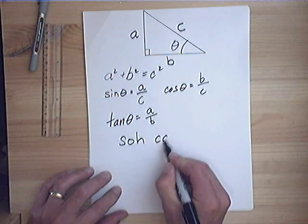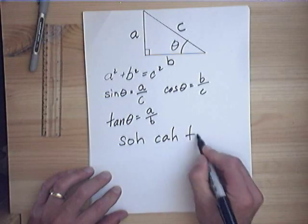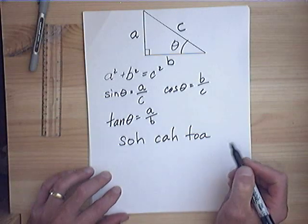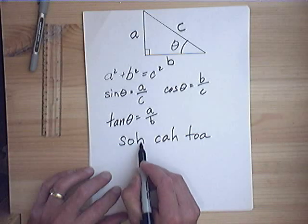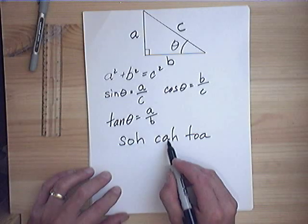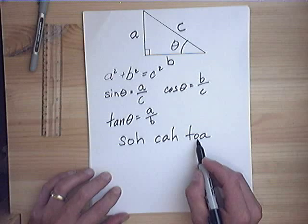Soh-cah-toa. Sine is opposite over hypotenuse. Cosine is adjacent over hypotenuse. And tangent is opposite over adjacent.